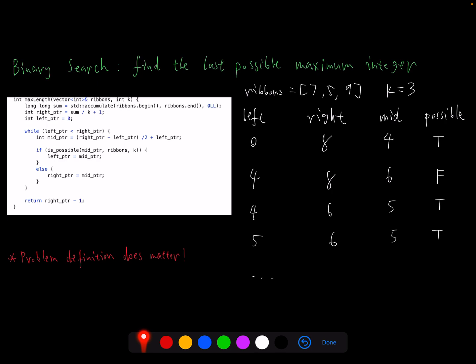One thing I do want to warn you is that how you define the search problem is very important for binary search. If you remember previously, I searched for the first impossible integer. Right now I changed my problem definition to find the last possible maximum integer.